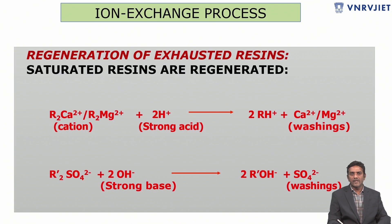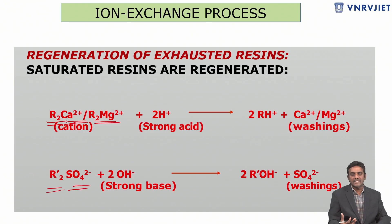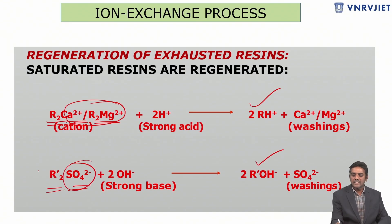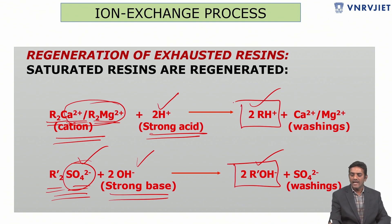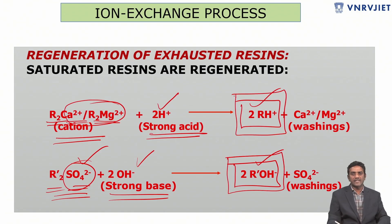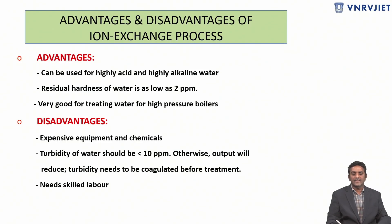H⁺ ions released from the cation exchanger and OH⁻ ions released from the anion exchanger together with our water produce pure water — H₂O — that is deionized water. Moving on to regeneration: we must regenerate the resins because they are bound with calcium, magnesium, and sulfate ions. Since resins are costly, we must wash acidic resins with strong acid and basic resins with strong base to restore them as R-H⁺ and R-OH⁻, ready to be reused.